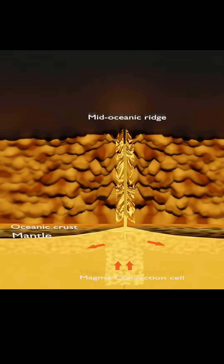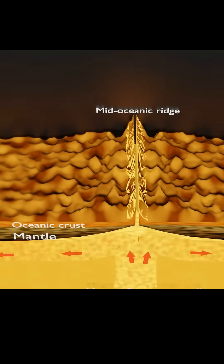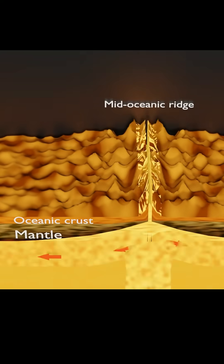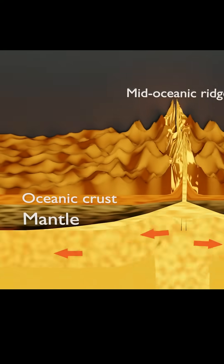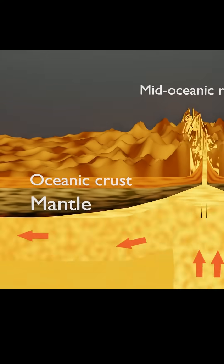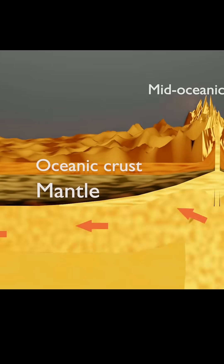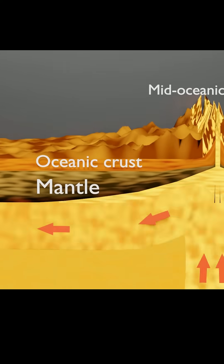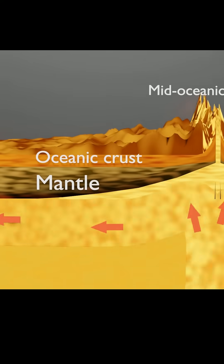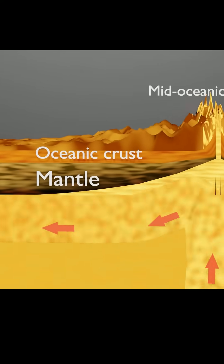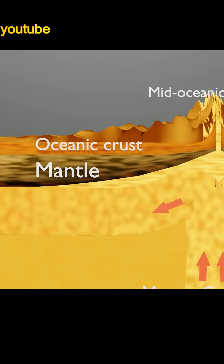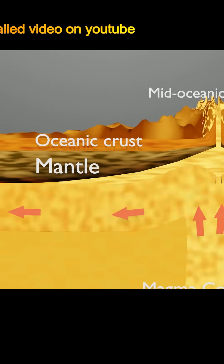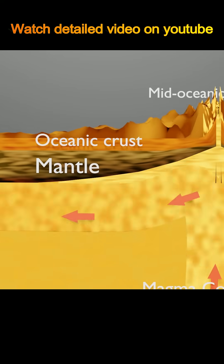Now because of the movement of the convection cells, the seafloor also moves in two directions away from the mid-oceanic ridges. The structures which are formed at the mid-oceanic ridge are slowly taken from the mid-oceanic ridge away to the boundary of the seafloor.